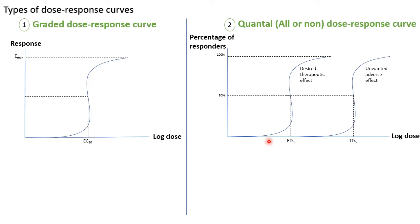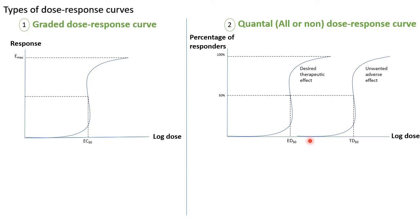Now, what if the space between ED50 and TD50 on the dose-response curve is small — TD50 is near ED50? That means by increasing the dose just a little bit above the therapeutic dose, we start to enter the curve of unwanted adverse effects. There is very little difference between ED50 and TD50, so we would expect this drug to be less safe.